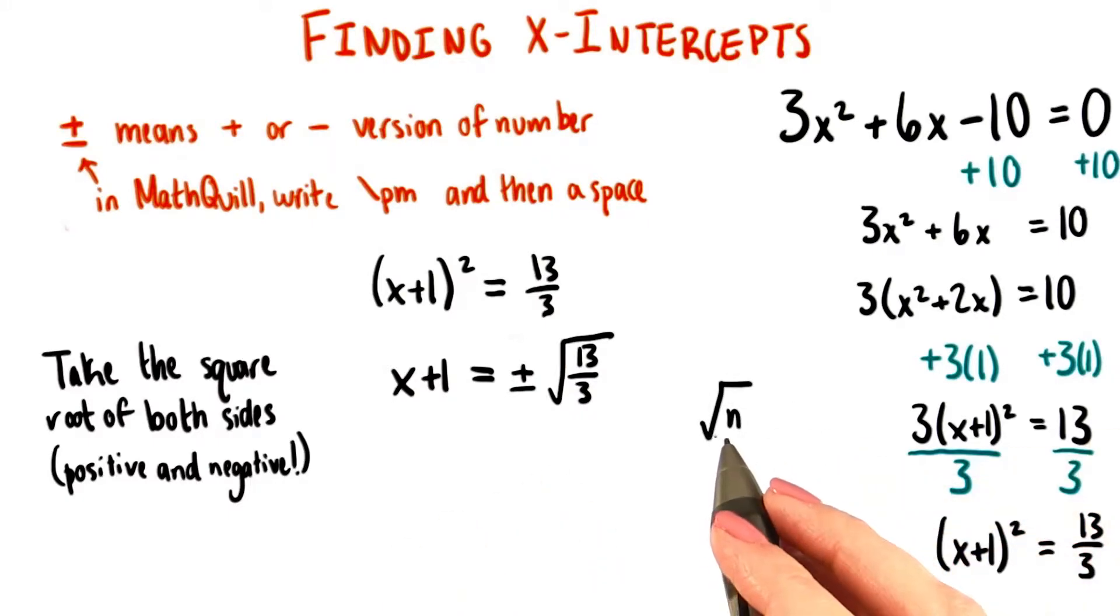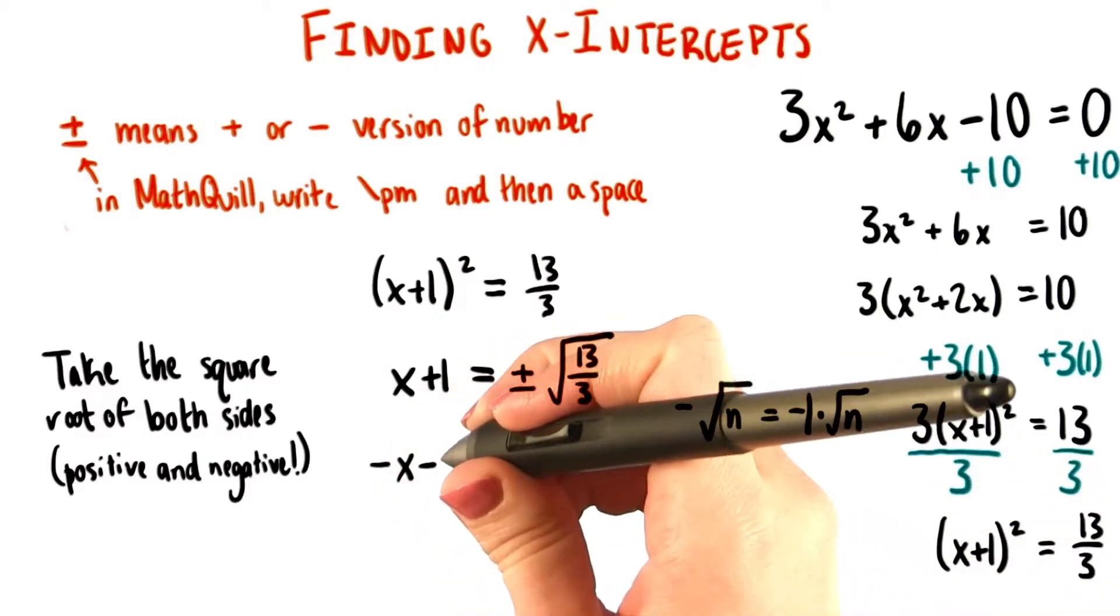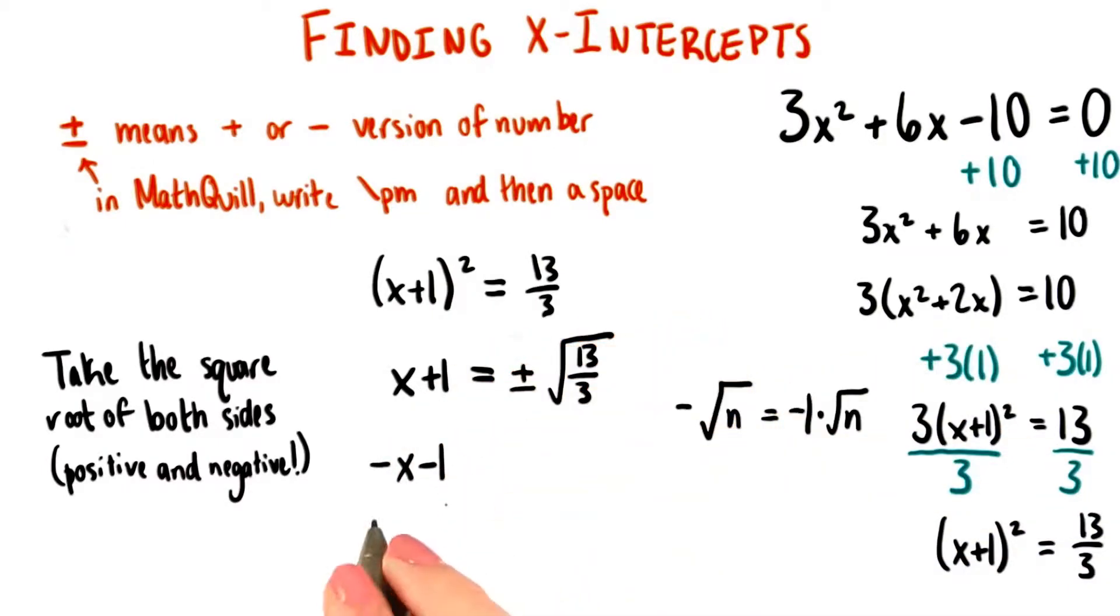We know that if we have a square root of a number and we make that negative, then that's just equal to negative 1 times the square root of that number. The negative version of this square root of x would then be negative 1 times that, which is negative x minus 1.